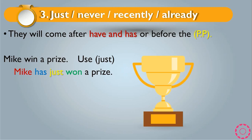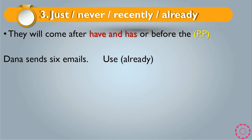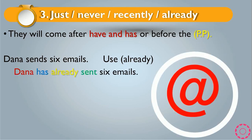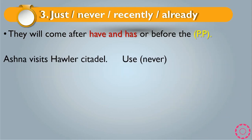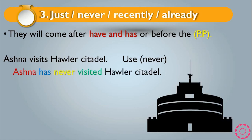We cannot say 'Mike has won just a prize' — that is incorrect. It must be 'Mike has just won a prize.' Another example: 'Dana sent six emails' — use already. It becomes 'Dana has already sent six emails.' Send is irregular and became sent. Another: 'Ashna visit Howler Citadel' — use never. It becomes 'Ashna has never visited Howler Citadel.'